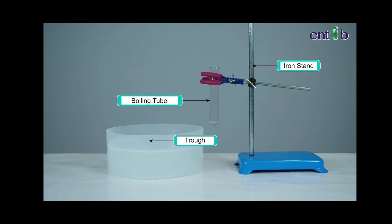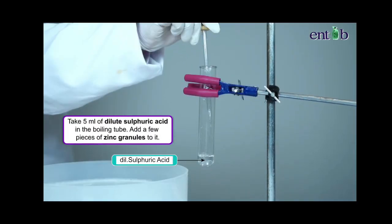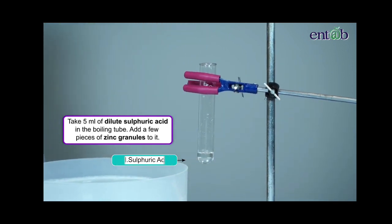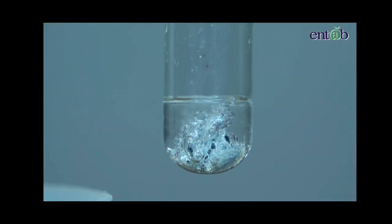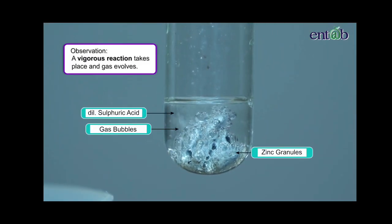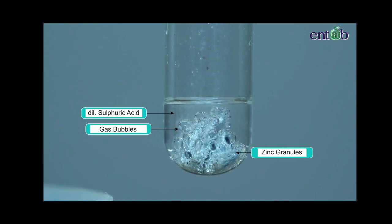Let's set up the apparatus like this. Let's take 5 ml of dilute sulfuric acid in the boiling tube and add a few pieces of zinc metal to it. What do you observe? We can discern a vigorous reaction takes place and gas evolves. Look carefully.